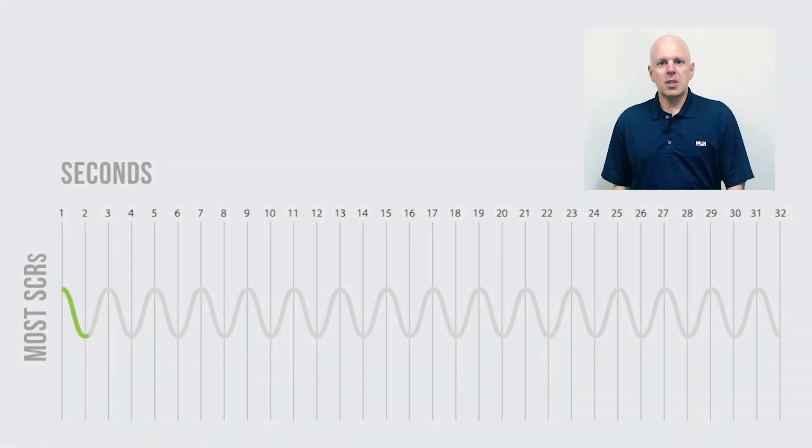How does Watlow do this? Most SCRs are fixed time-based zero-cross controllers. In a fixed time-based control scheme, if the program calls for 25% power, the SCR will be on for, say, one second and off for three. Over the course of four seconds, this equals 25% power.